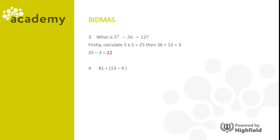Here's another one: eighty-one divided by (thirteen minus four). Thirteen minus four equals nine, and eighty-one divided by nine is nine. Here's another calculation: three times (nine minus six). Looking at the brackets first, nine minus six equals three, then multiply by three — the answer is nine.